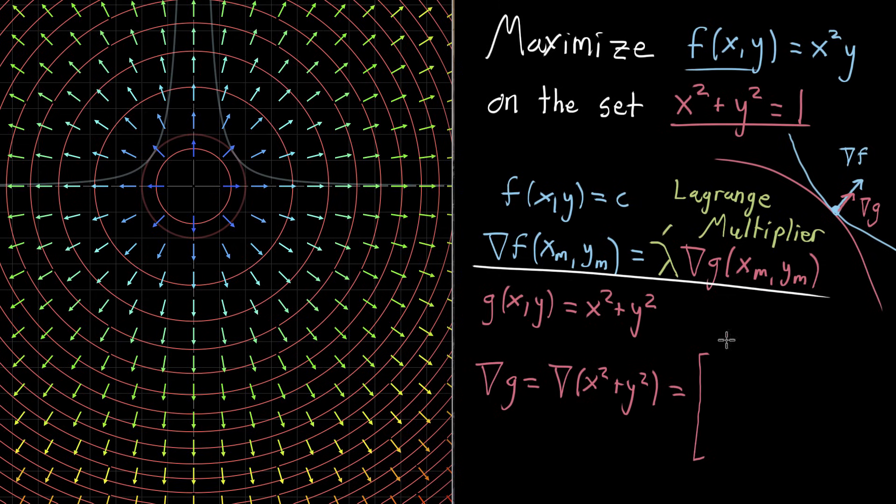The derivative is 2x. The second component, the partial derivative with respect to y. So now we're treating y as the variable. x is the constant. So the derivative looks like 2y.